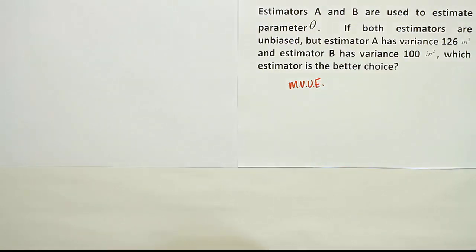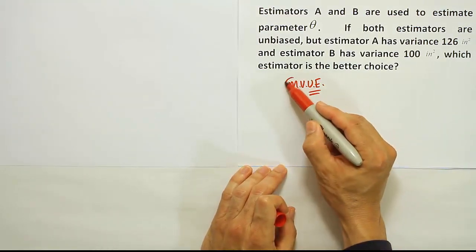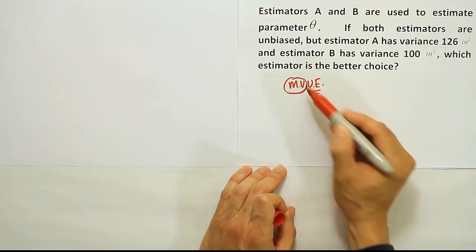MVUE, that's the desired choice. So whenever we're choosing between two unbiased estimators, that's the first thing you look for to make sure they're unbiased. The next criteria is to see which one has the smaller variance, the minimum variance.